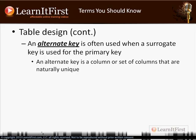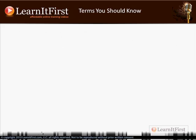An alternate key is a column or set of columns that are naturally unique. Now wait — you were just talking about a natural key, then switched to a surrogate key, and now you're saying an alternate key is a surrogate key but also has a natural key? Yeah, that's exactly the way it is.